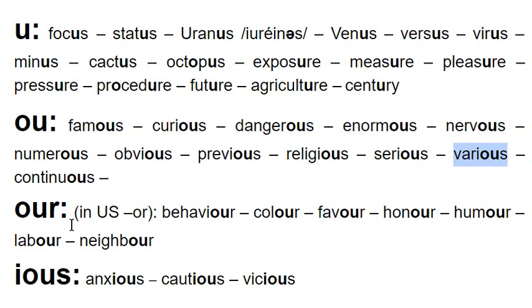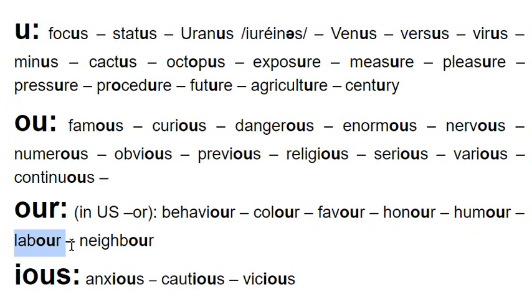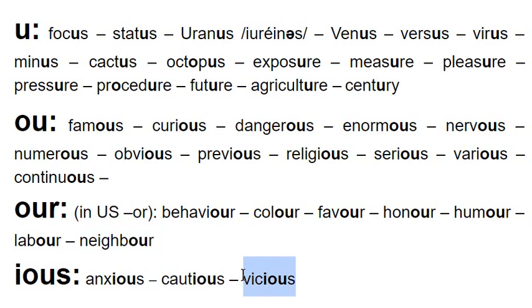Spellings O-U-R, which in the US are usually spelled O-R: behavior, color, favor, honor, humor, labor, and neighbor — it's not 'neighbor' or 'neighbour', it's 'neighbor'. And the I-O-U-S spelling, which is a difficult one — you have to do it with just one sound: anxious, cautious, vicious.